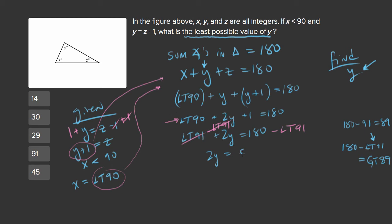So 2y is some number greater than 89. And now let's divide both sides by 2. And we end up with y is equal to some number greater than, I'm going to take 89 and divide it by 2 to get 44.5.